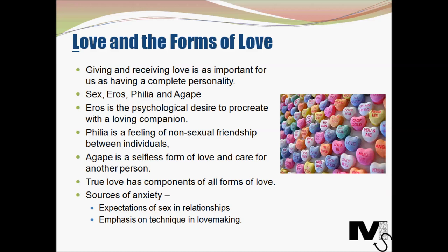The last type is agape — a selfless form of love and care for another person, like the love between a parent and its offspring. It is a type of love without gain, or unconditional love. Just as eros needs philia, philia would also need an element of agape, so these are all interlinked with one another. May also believed that all true love has components of all forms — there is no particular type of pure, true love, but rather true love is a combination of the various forms.